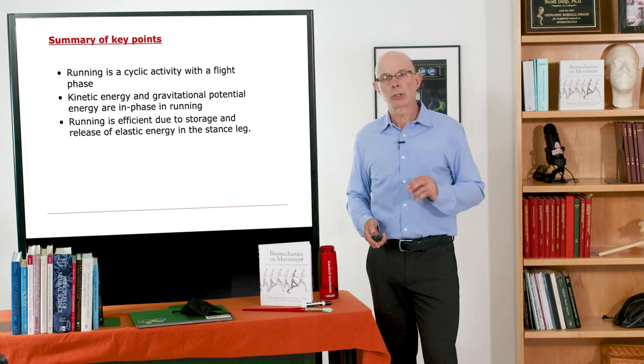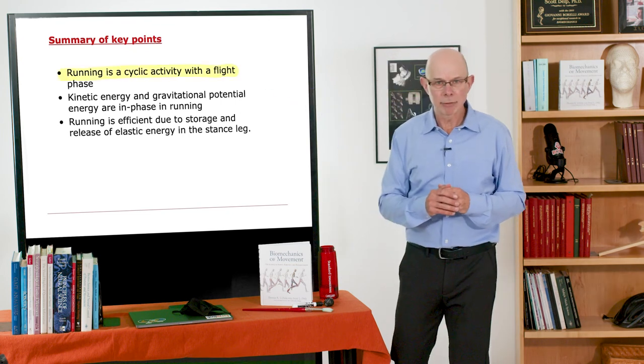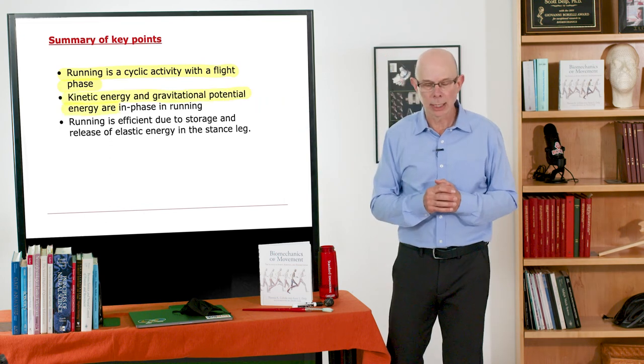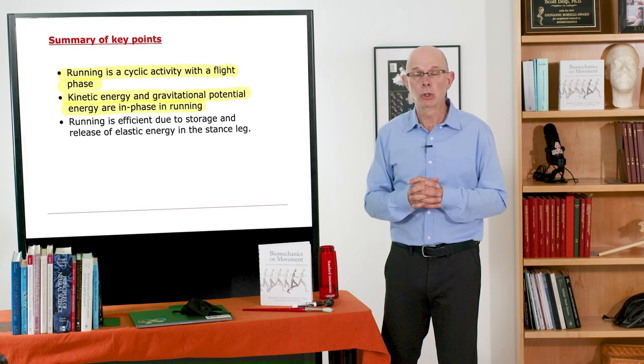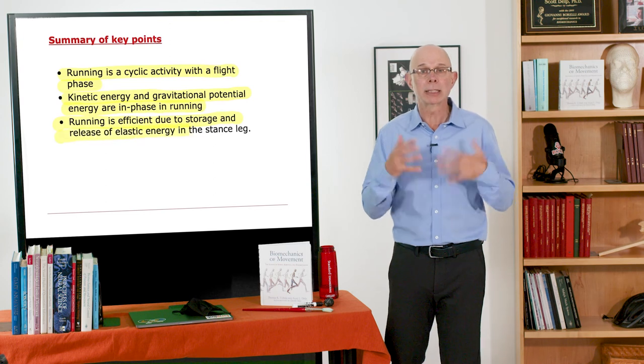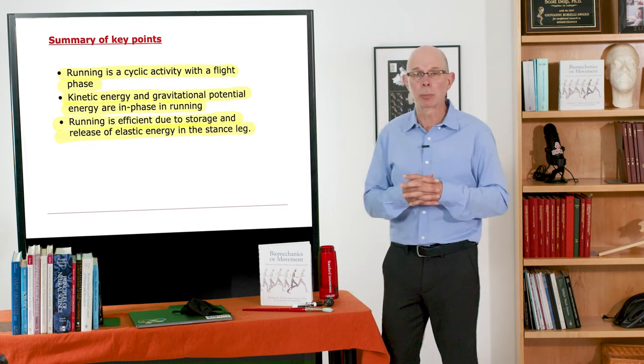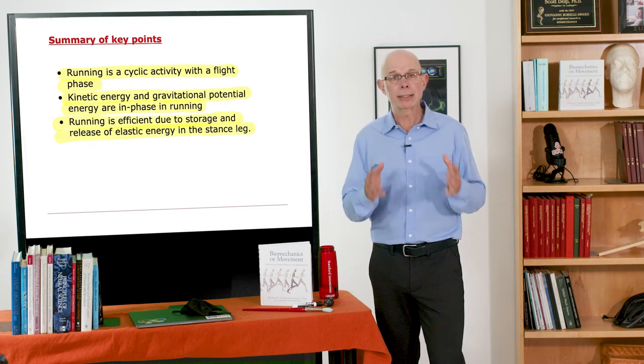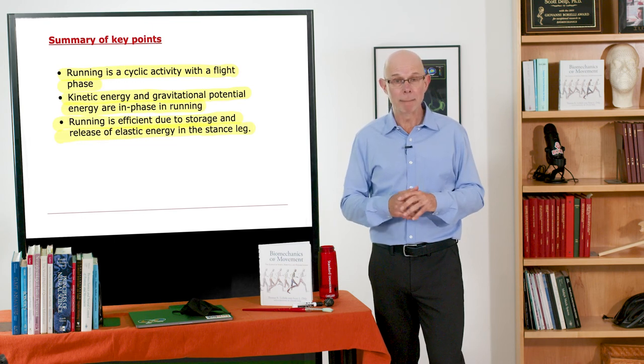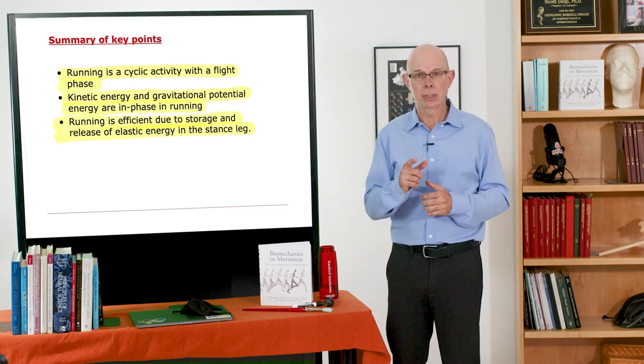So just some key points to summarize from this lecture is that running is a cyclic activity, much like walking, but in running we have a flight phase. The kinetic energy and gravitational potential energy are in phase during running in contrast to walking. Nonetheless, running is efficient due to elastic storage of energy in muscle and tendon. We store energy during the stance phase, release it as we push into the flight phase, and that's how human runners are so efficient. It turns out that same principle holds true in many animals. We saw that for the kangaroo here, but it holds true for other animals as well. See you next time.